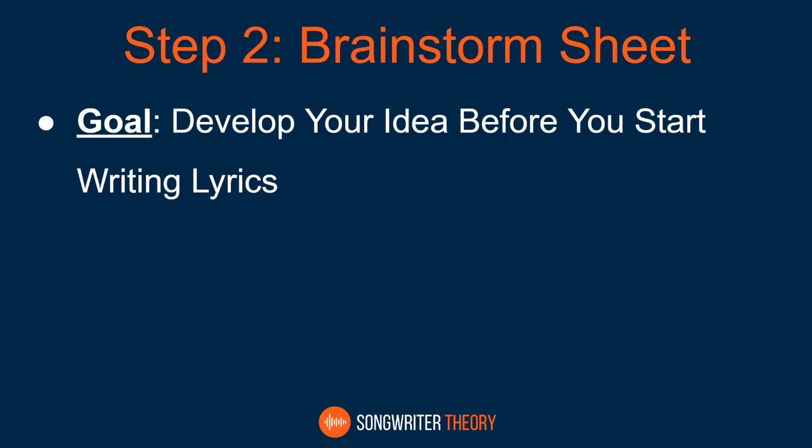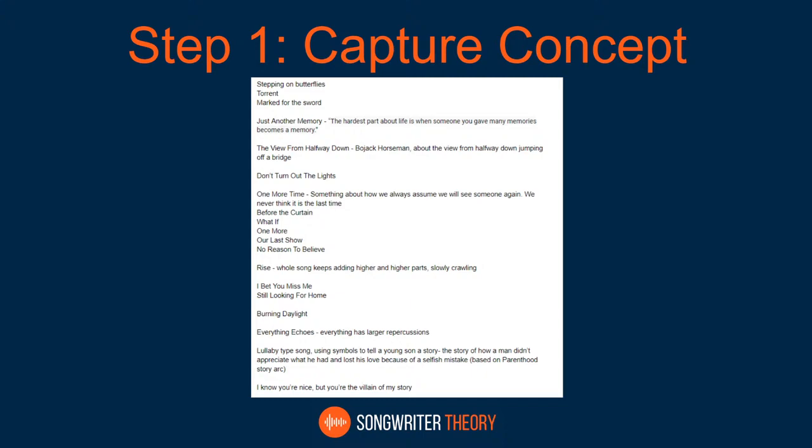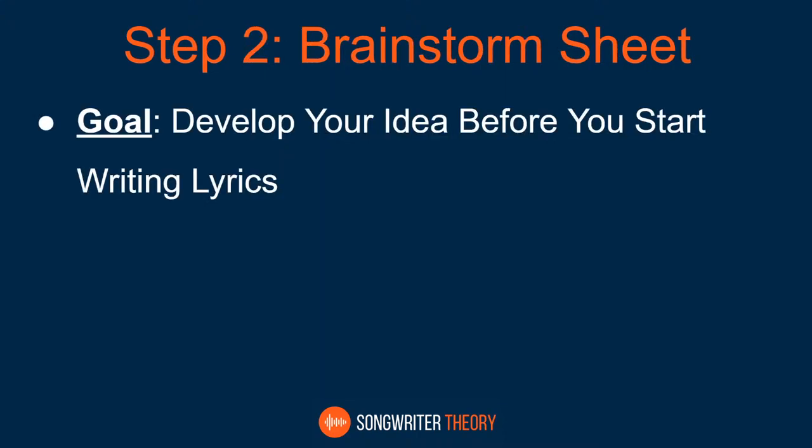Step two: brainstorm sheet. Notice we're on step two and haven't started writing lyrics yet — step three is writing lyrics. The goal of a brainstorm sheet is to develop your idea before you start writing. At this point you have maybe 100 song ideas. Now you look through that sheet and pick the ones you're most inspired by — say 'stepping on butterflies' or 'the view from halfway down' — and create a new dedicated sheet for each.